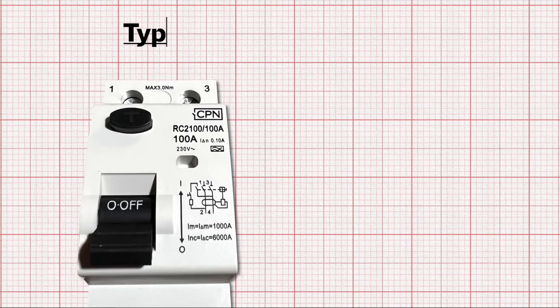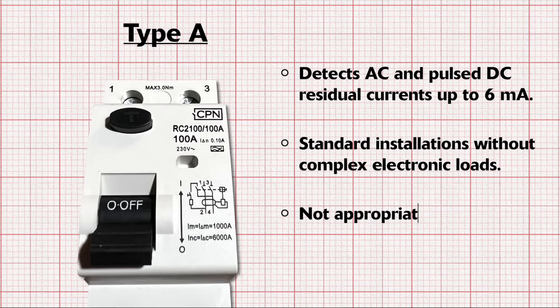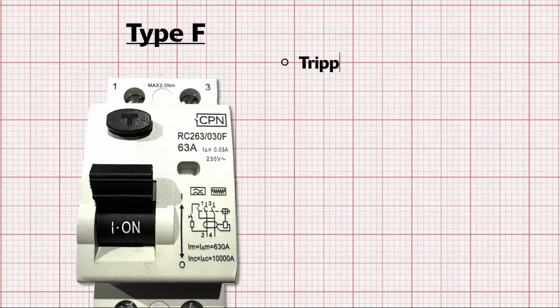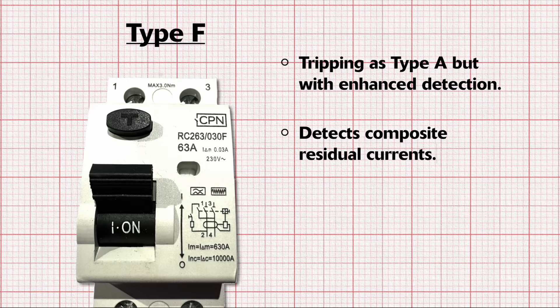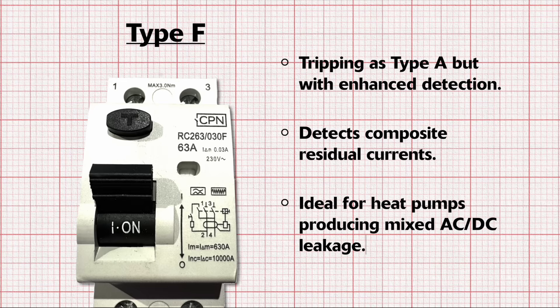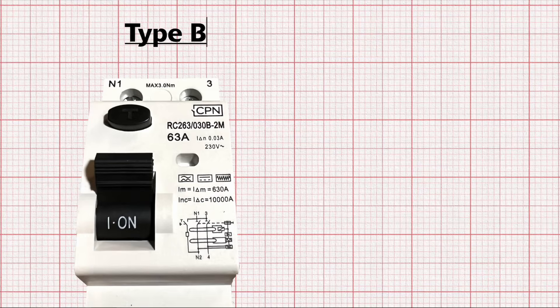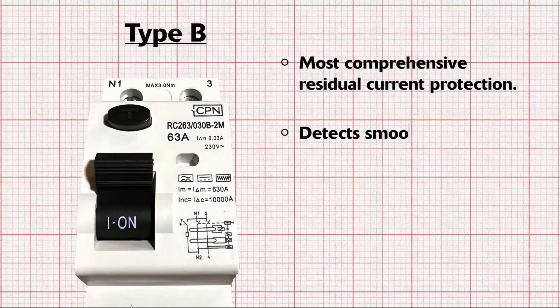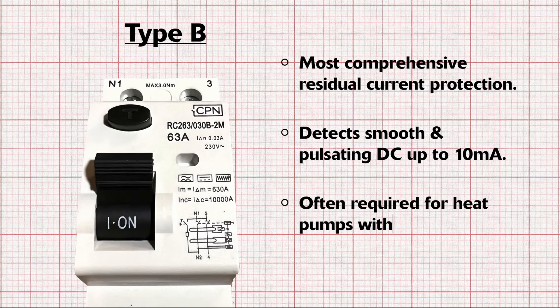There are several types of RCDs, each designed to handle different current characteristics. Type A RCD: this device is designed for alternating sinusoidal residual currents and residual pulsing DC up to 6 milliamps. However, it's not suitable for systems like heat pumps that have inverters that produce composite residual currents. Type F RCD: this type has the same tripping characteristics as type A, but can also detect composite residual currents, even those with slowly rising or suddenly applied components — suitable for heat pumps that generate mixed AC and DC currents. Type B RCD: offering the broadest protection, type B RCDs can handle residual pulsating DC currents superimposed on smooth DC up to 10 milliamps, and are often required for heat pump installations with specific inverters.